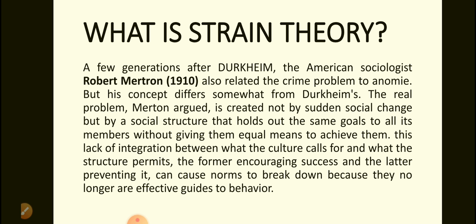What is strain theory? A few generations after Durkheim, the American sociologist Robert Merton, 1910, also related the crime problem to anomie. But his concept differs somewhat from Durkheim's. The real problem, Merton argued, is created not by sudden social change, but by a social structure that holds out the same goals to all its members without giving them equal means to achieve them. This lack of integration between what the culture calls for and what the structure permits — the former encouraging success and the latter preventing it — can cause norms to break down because they no longer are effective guides to behavior.